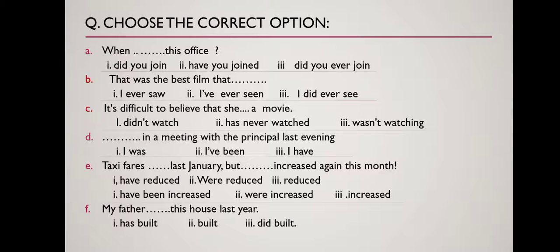Sentence A: '[...] when this office?' Options are: 'did you join,' 'have you joined,' 'did you ever join.' The correct answer is: 'When have you joined this office?' — because the joining took place and he is still in that office, so we use present perfect tense. Sentence B: 'That was the best film that I [ever see].' The correct answer is: 'I have ever seen.'